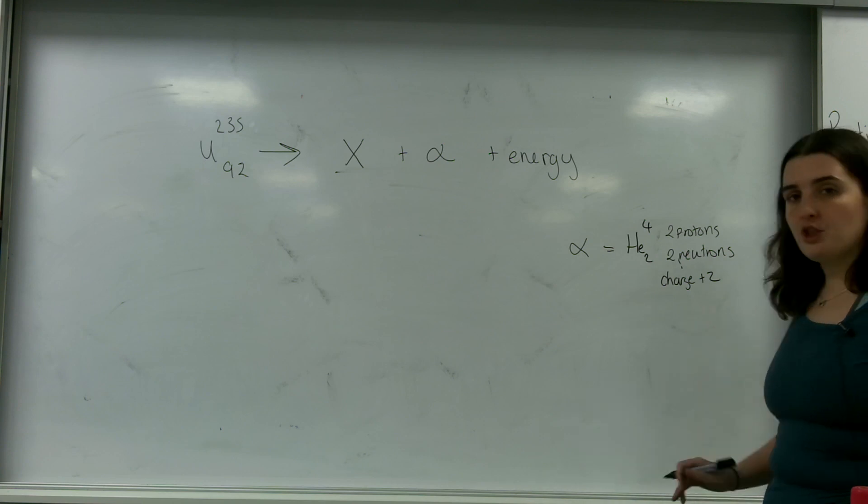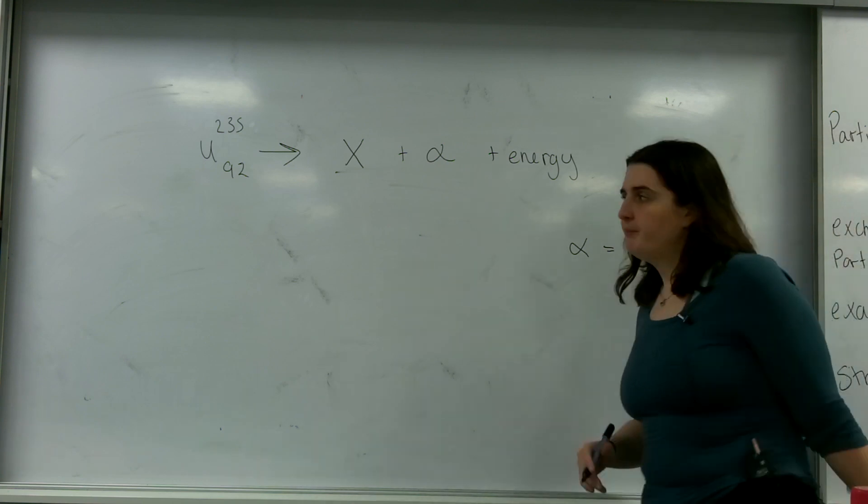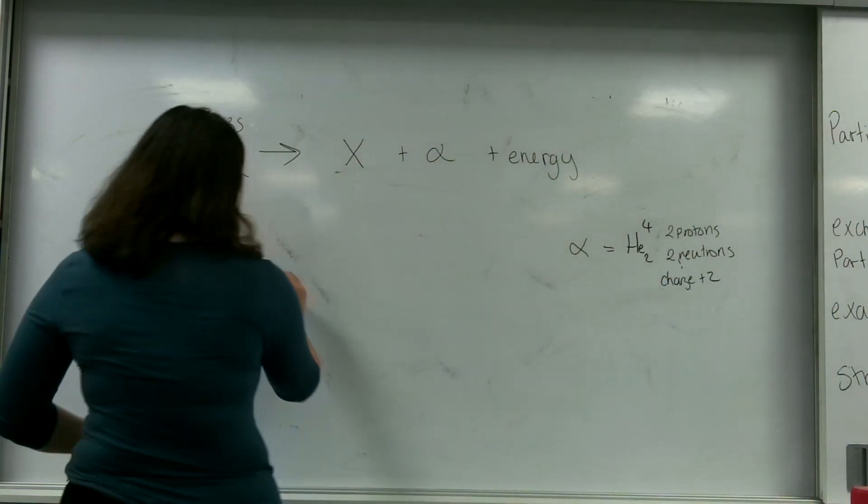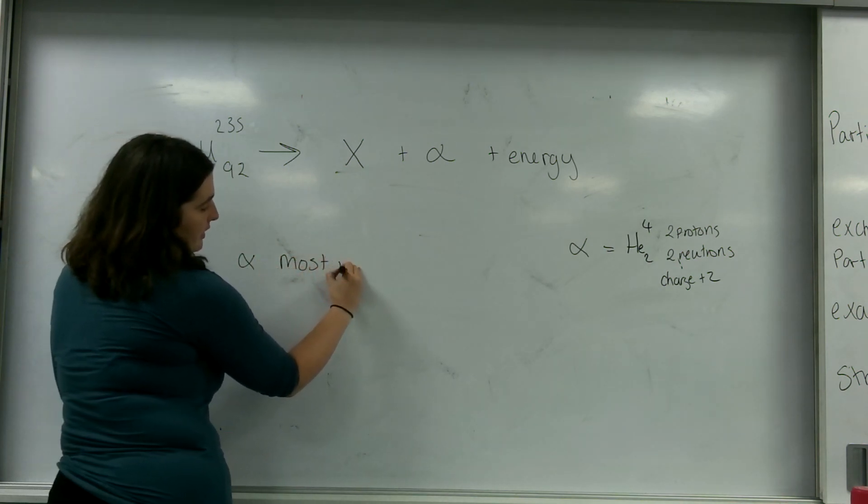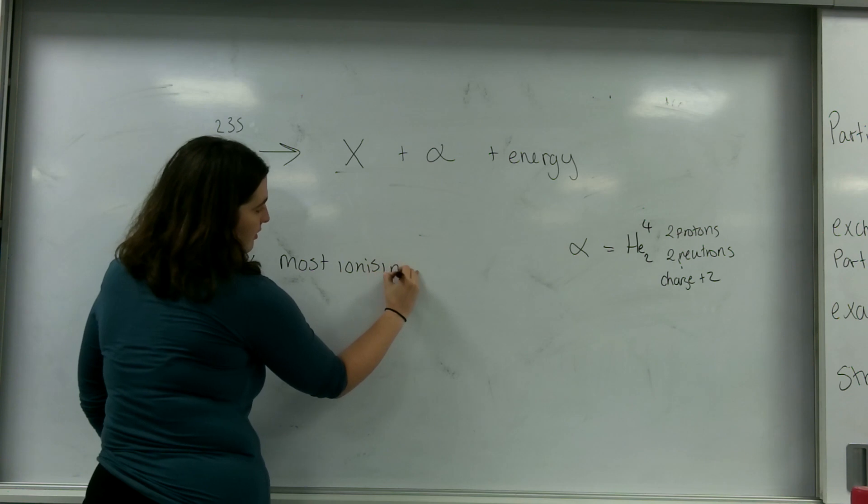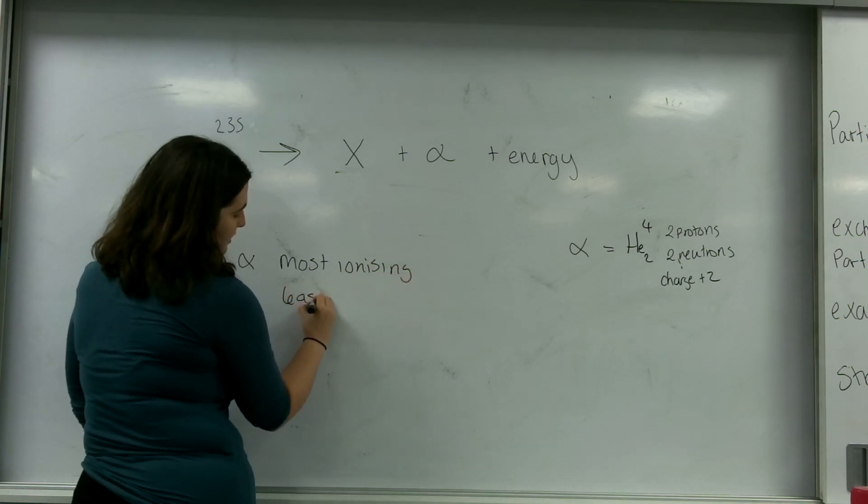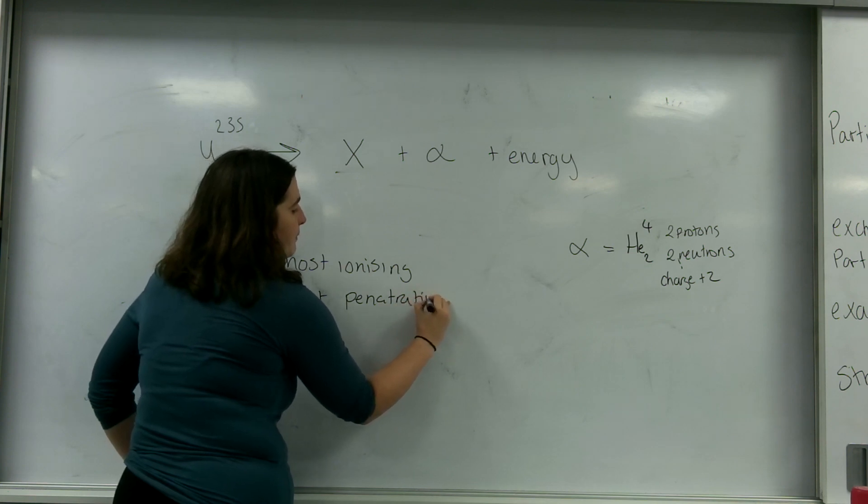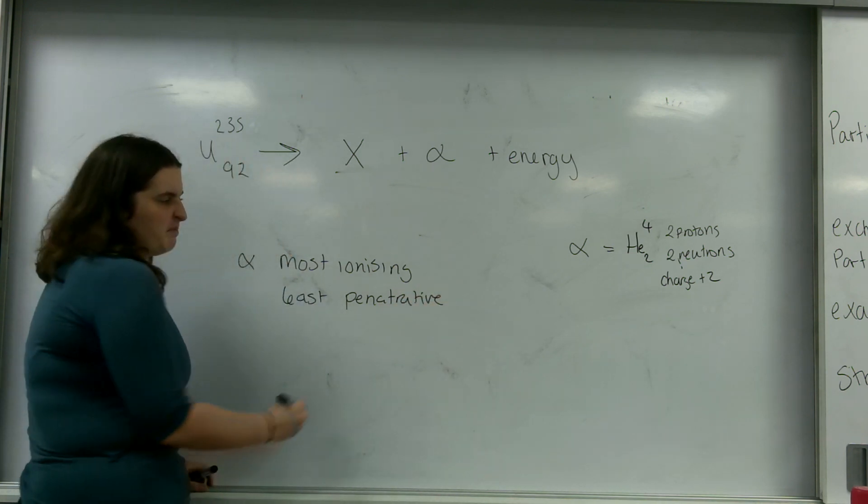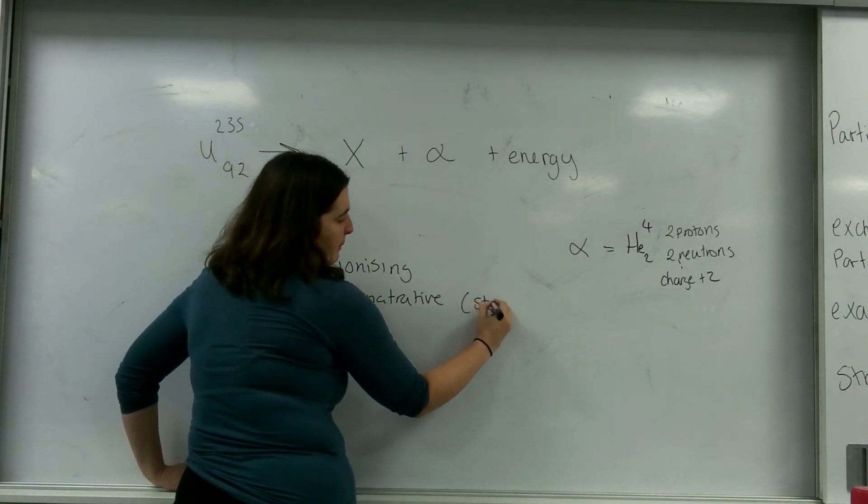I'm just going to remind you that alpha is the most ionising but the least penetrative. It will be stopped by paper.